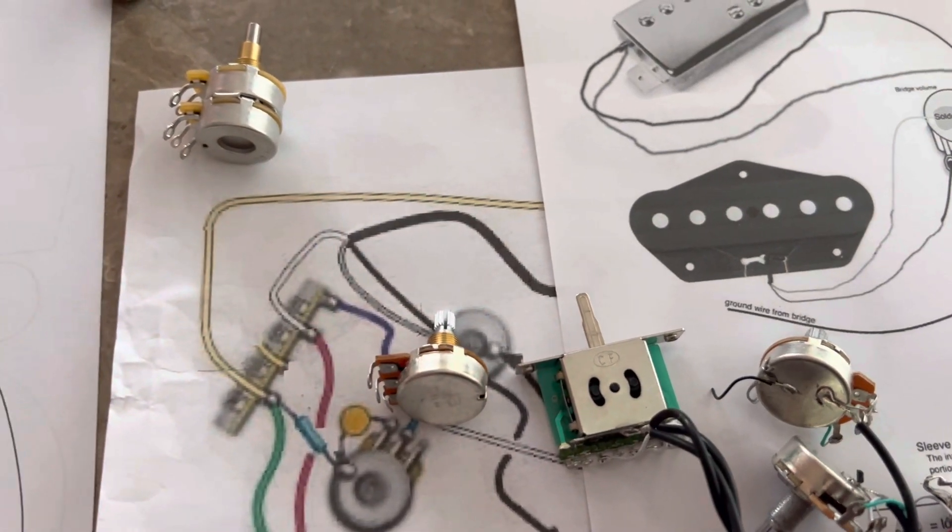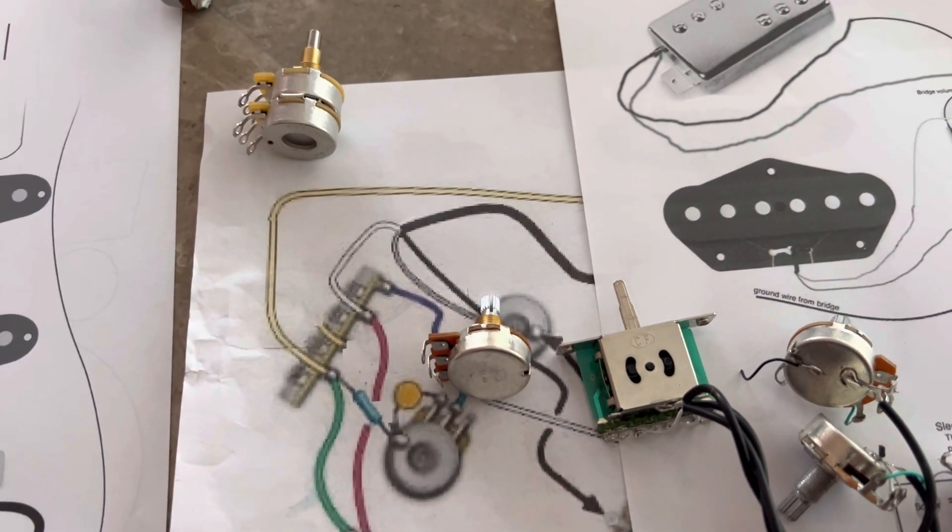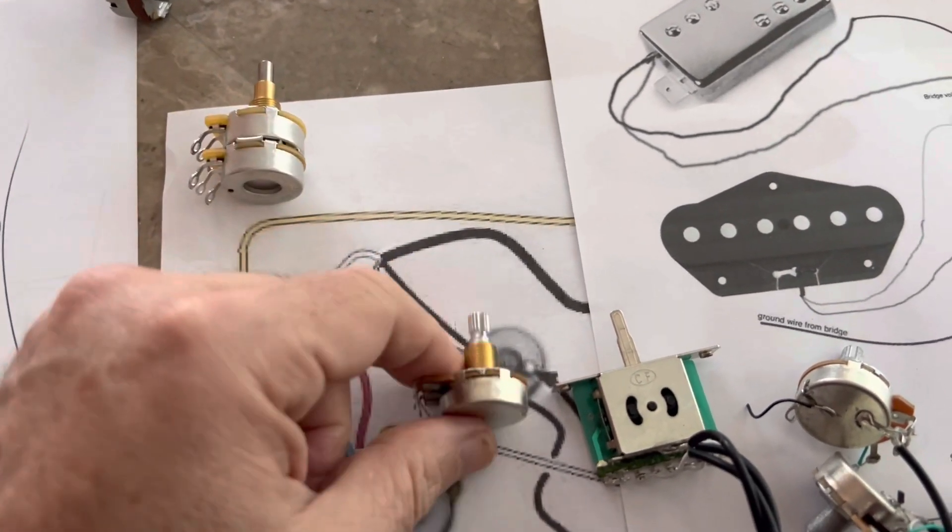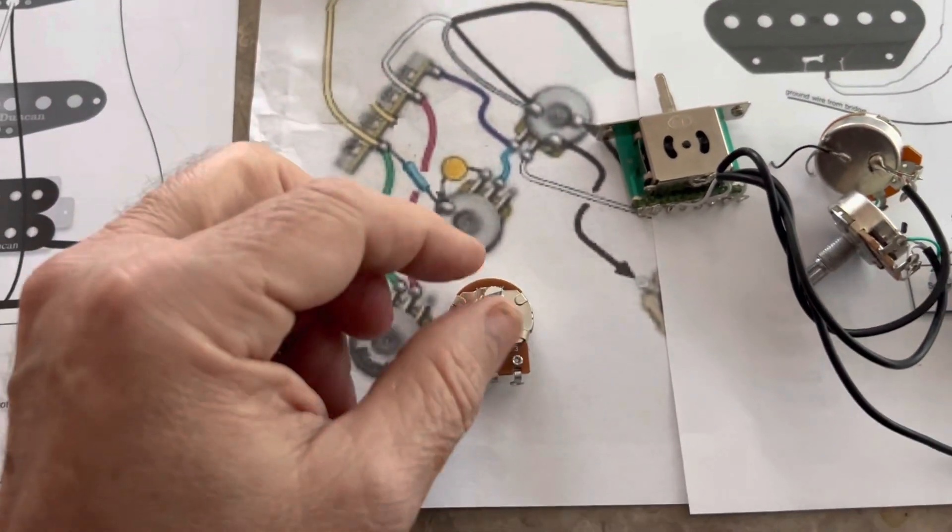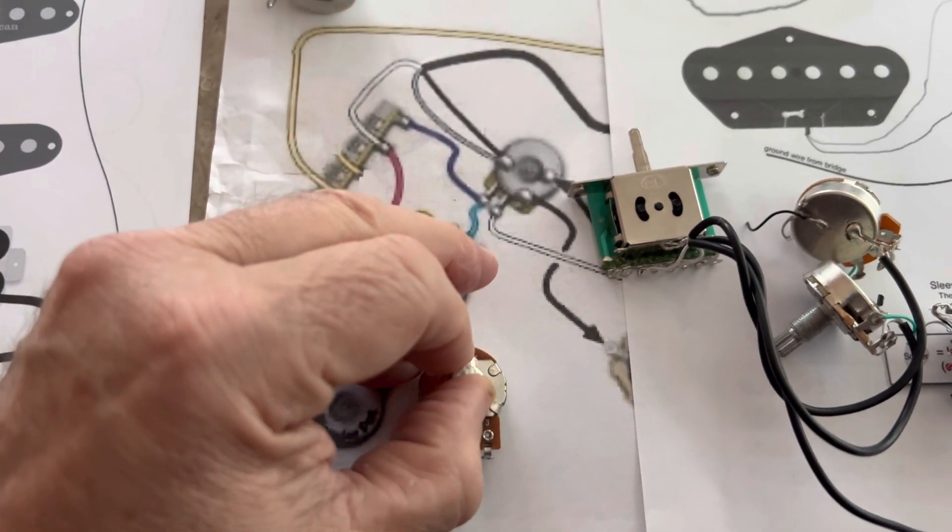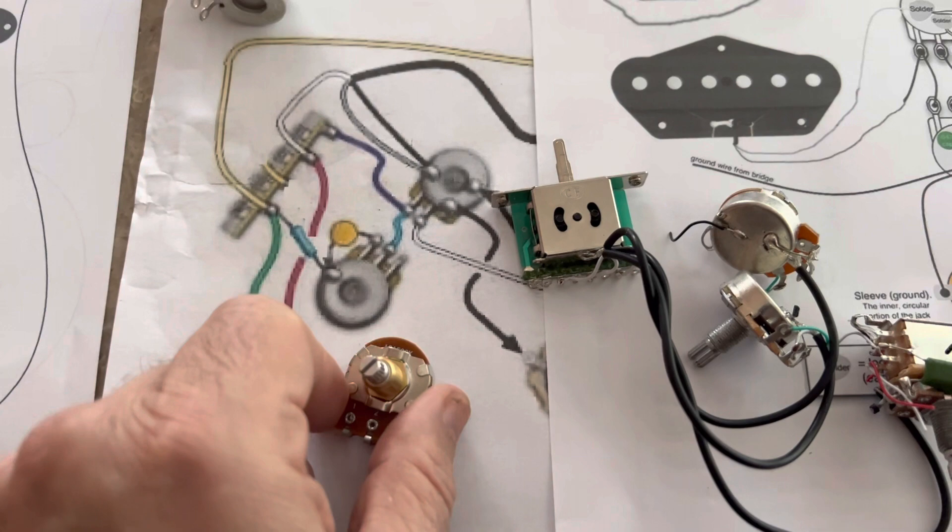Next, the two main brands are Bornes and CTS. They make the best pots. Some of the cheap pots you'll find in guitars act more like a switch than something you roll off. So the pot is important.